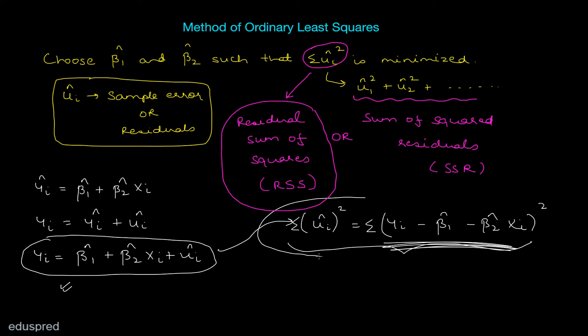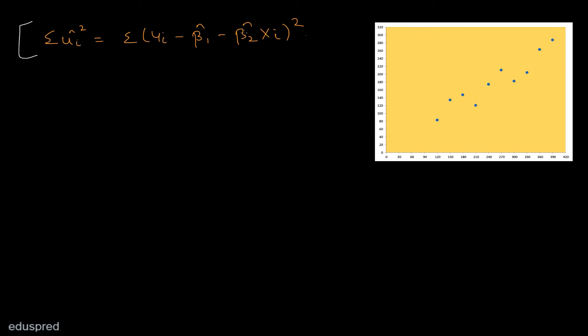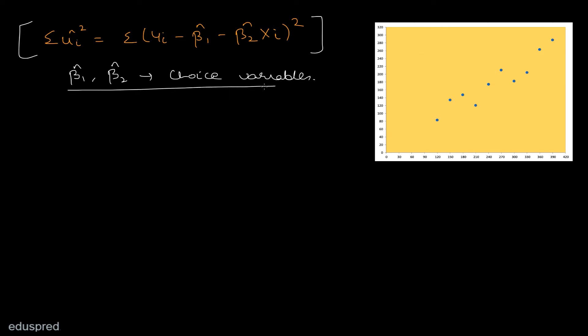Now let's understand how we are going to choose the values of beta1 hat and beta2 hat such that this mathematical function is minimized. We have to minimize this function with respect to beta1 hat and beta2 hat, which implies that beta1 hat and beta2 hat are the choice variables. This might sound a bit weird because in elementary calculus the choice variables used to be x and y. However, here we already have the values of x and y from our sample data, so they are not the choice variables — beta1 hat and beta2 hat are.